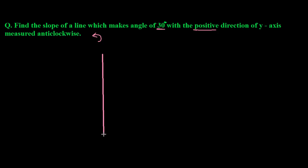Let me say this is my y-axis and this is the x-axis. Now see what the question is saying. The line makes 30 degrees with the positive direction of the y-axis.